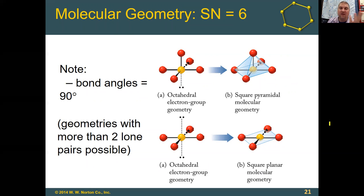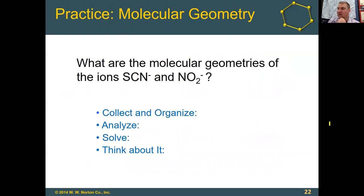We're not going to worry about three lone pairs for an octahedral geometry in this class. For practice, go ahead and draw the Lewis structures for the thiocyanate anion SCN⁻ and for the nitrate anion, and determine what the electron and molecular geometries for these would be.